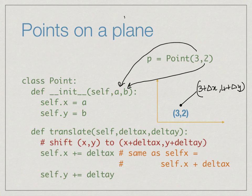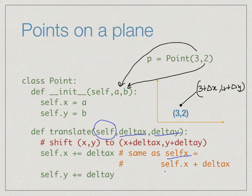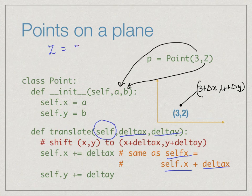The translate function takes the amount of shift as arguments delta x and delta y. As usual, self is always the default first argument — every Python class function in the object oriented style must have self as the first argument and then the real arguments. When we translate a point, we take self dot x and move it to self dot x plus delta x — a very common paradigm where you update a name by shifting it by some amount.